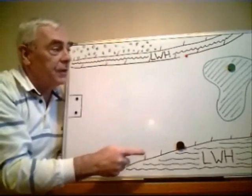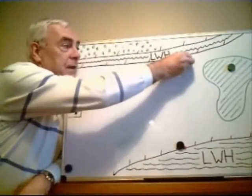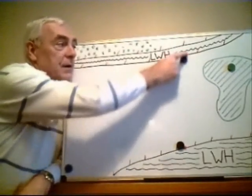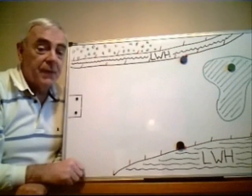So the best option for him is probably going to be to drop a ball within two club lengths, not nearer the hole, of the point where his ball last crossed the margin of the hazard. And he has one further option in this case.